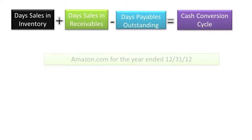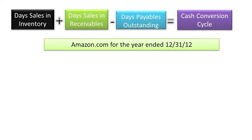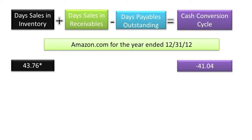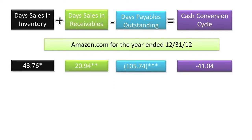Amazon's Cash Conversion Cycle for the year ended December 31, 2012, was a negative 41.04 days, computed as follows: Days Sales in Inventory 43.76, Days Sales in Receivables 20.94, less Days Payables Outstanding 105.74, resulting in a Cash Conversion Cycle of negative 41.04.